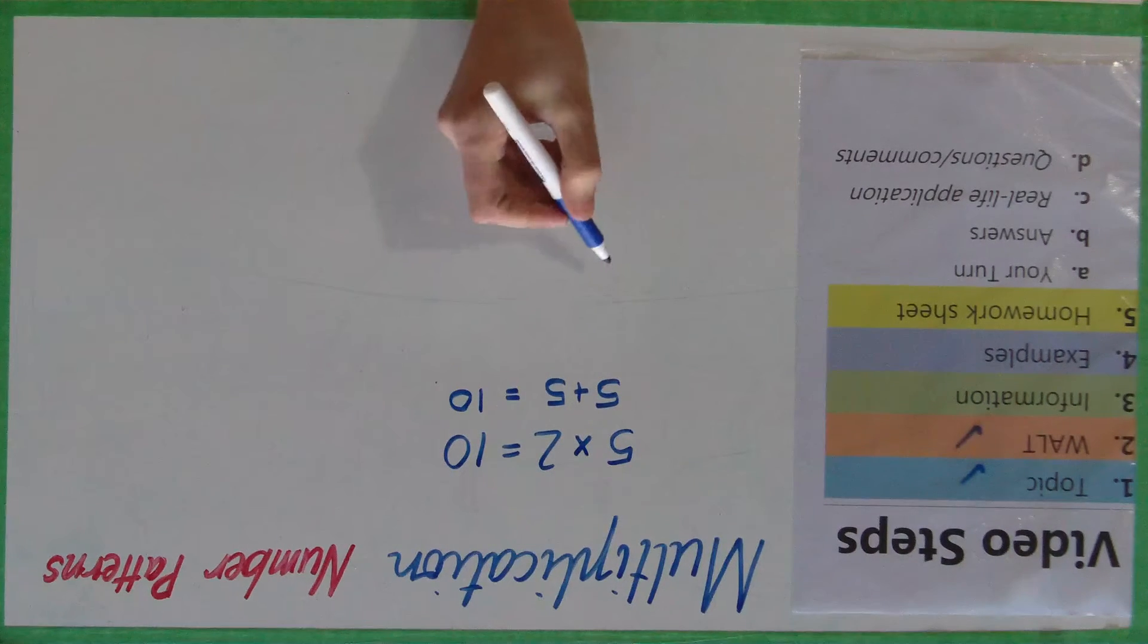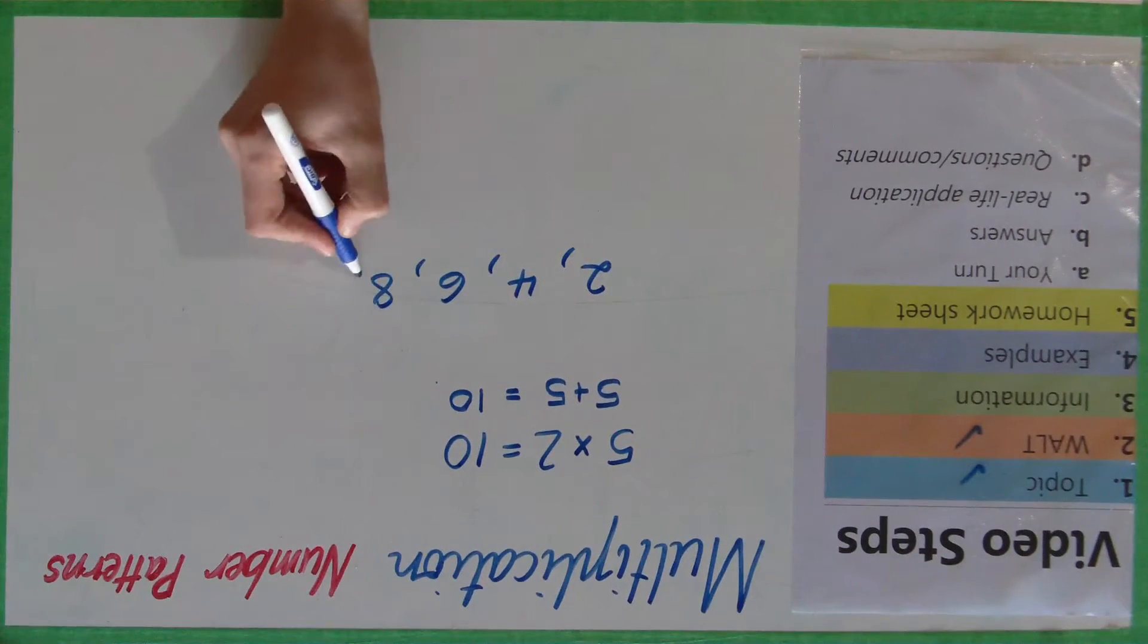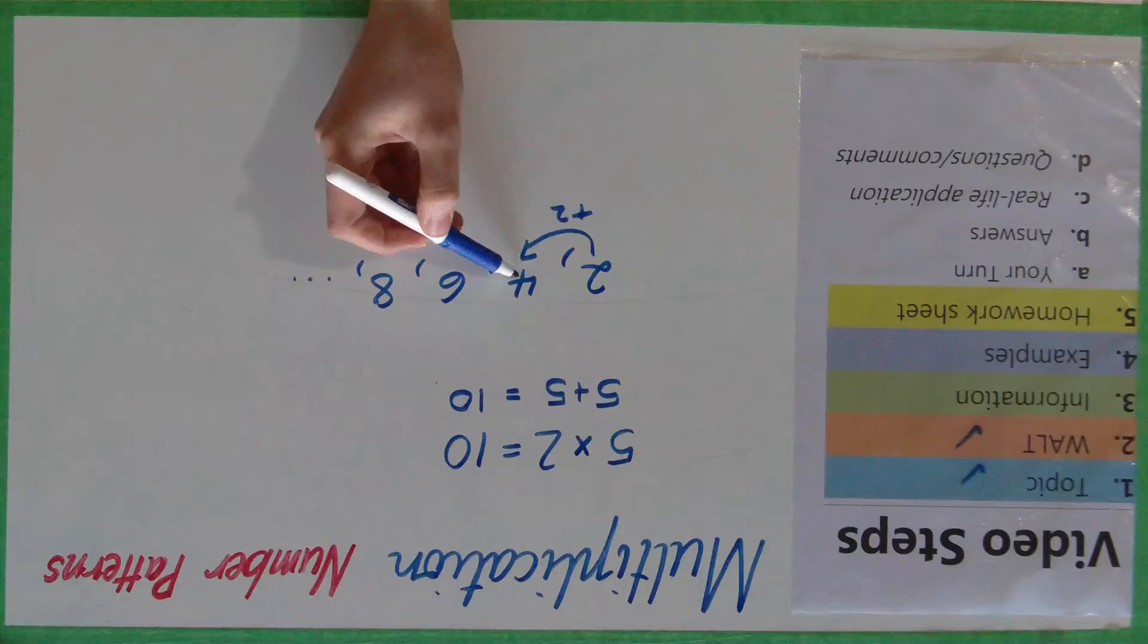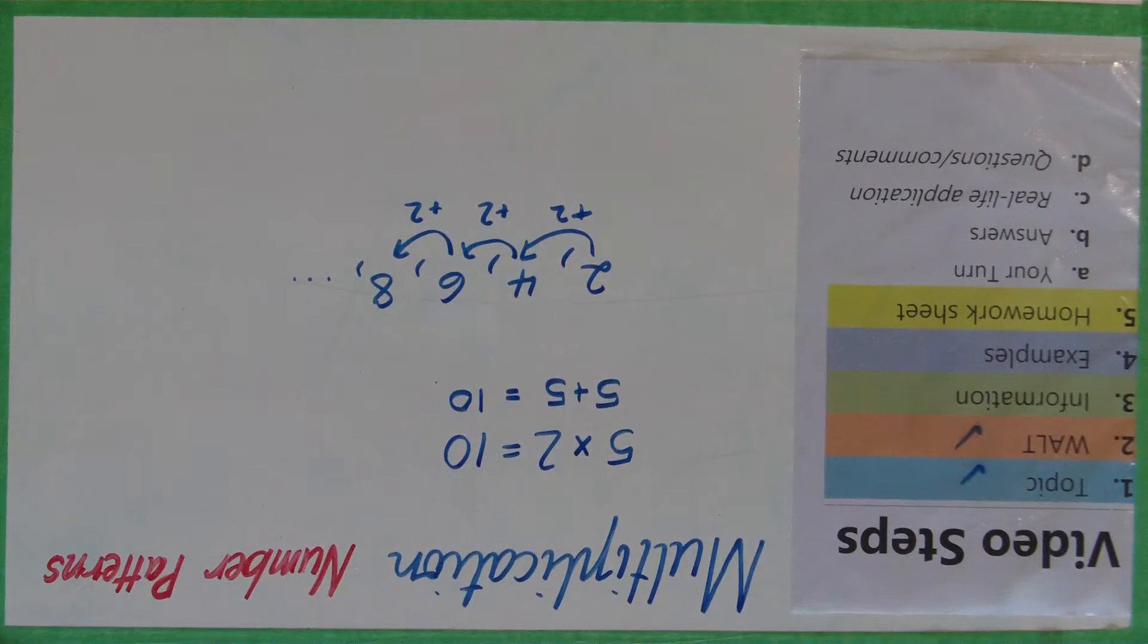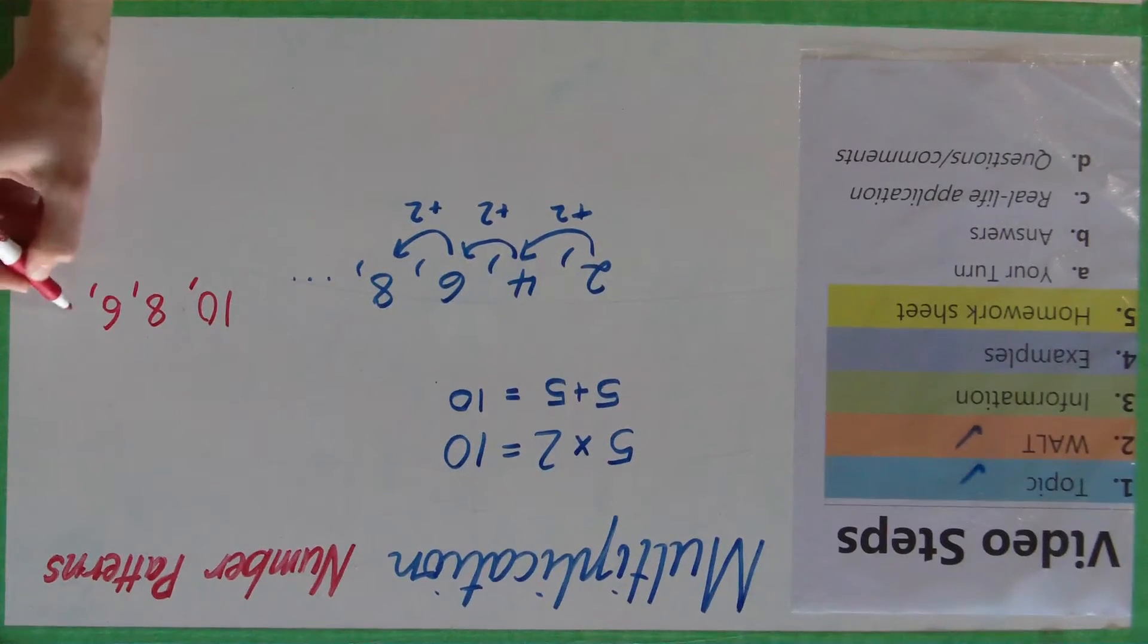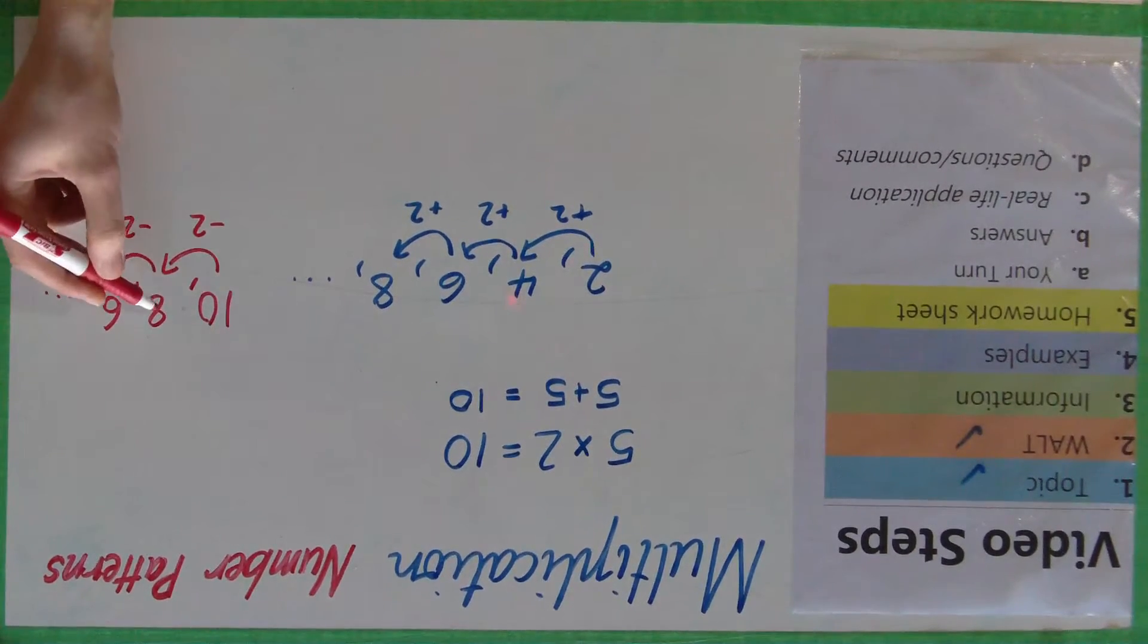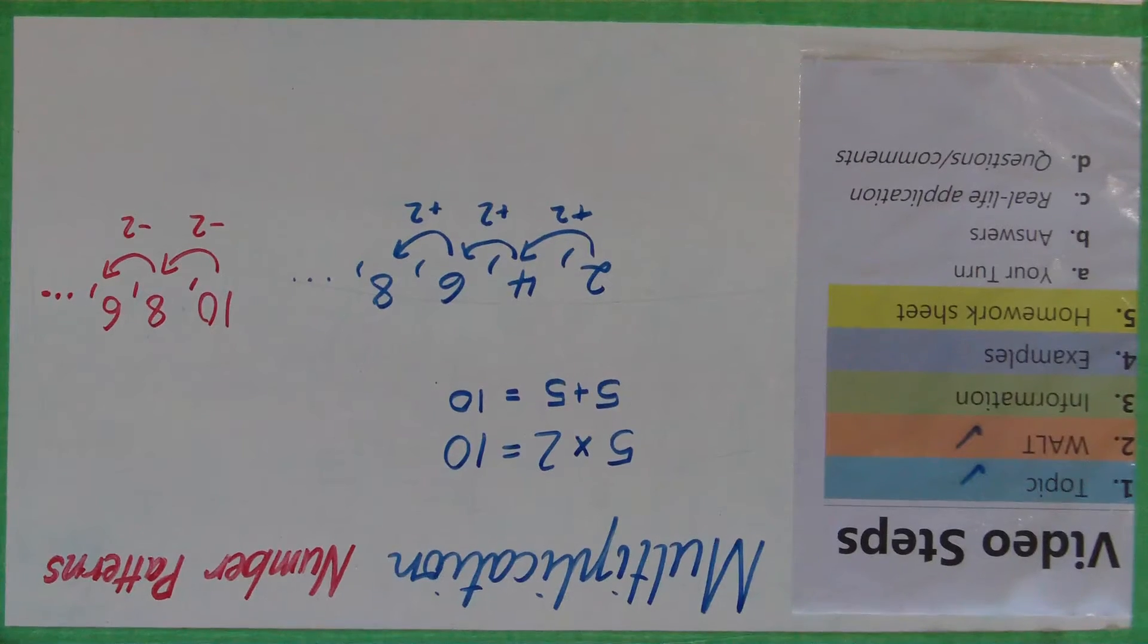For example you can have number patterns that go up with addition so you can have 2, 4, 6, 8 and so on, so here each time you are adding 2 to the previous one. So 2 plus 2 is 4, 4 plus 2 is 6, 6 plus 2 is 8. You can also have the subtraction ones so you might start off with 10 and 8, 6 and so on, each time you are taking 2. So 10 take away 2 is 8, 8 take away 2 is 6 and so on. These little dots here just mean the pattern continues.